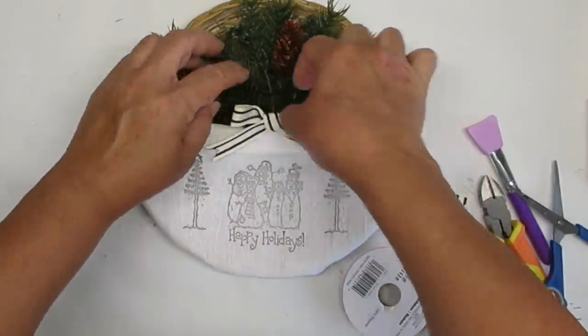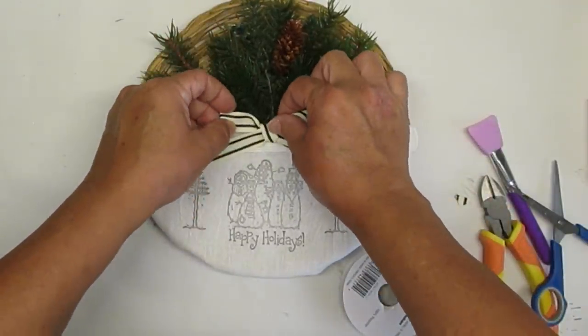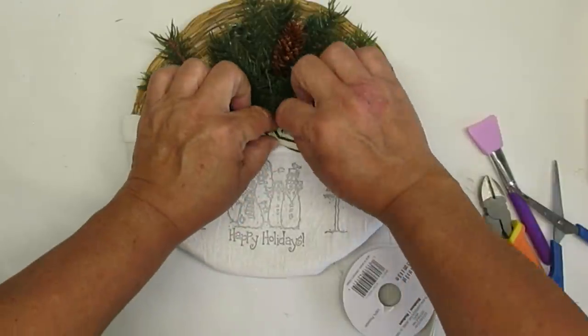I added a simple shoestring bow using some of this ticking stripe ribbon that I got from Michaels and hot glued it to the very top of the little snowman stuffed it with a little bit of holiday greens and this project is also done. I love it. I think the little snowman add a sweet little whimsical and rustic feel to this project.